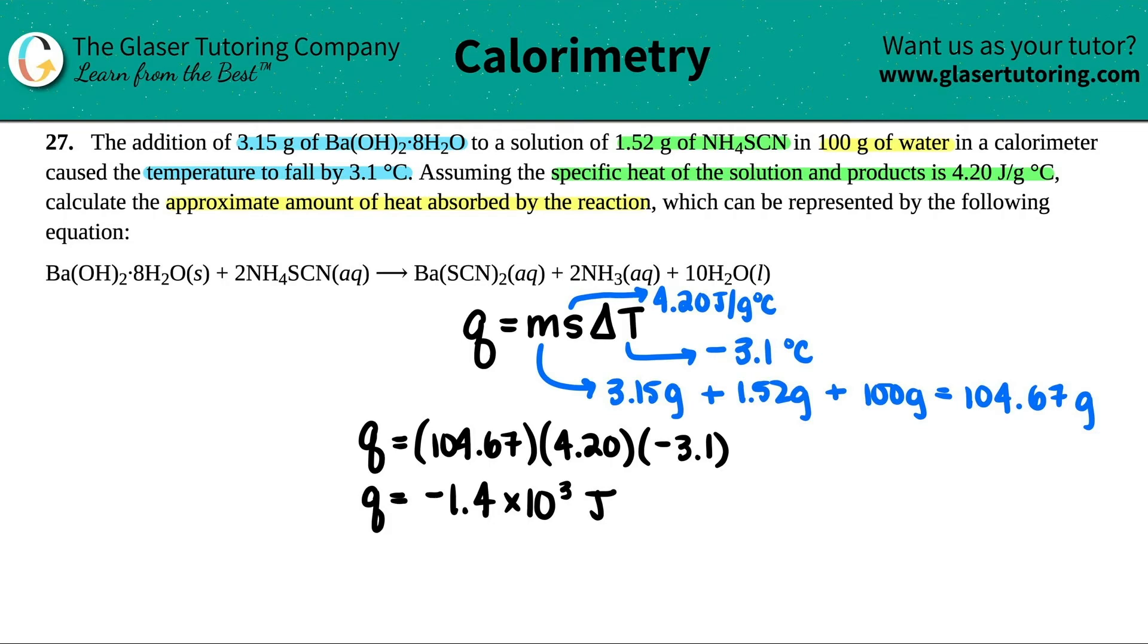They didn't say specifically if we wanted this in joules or kilojoules. To convert from joules to kilojoules, just divide by 1,000. Take this number, divide by 1,000, and we get negative 1.4 kilojoules. This is easier to work with. When doing solution calorimetry, I'll label this as Q of the solution: negative 1.4 kilojoules.